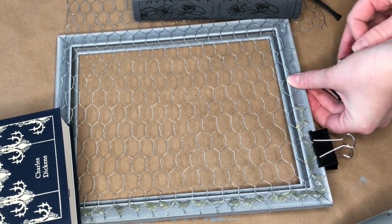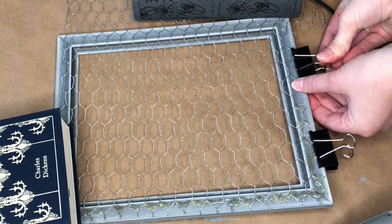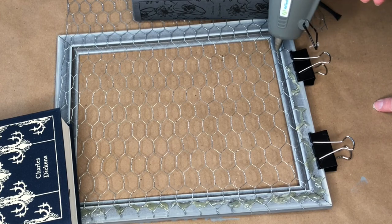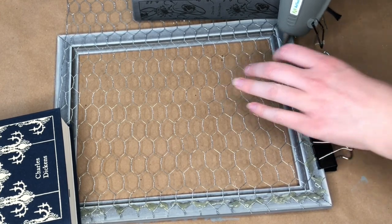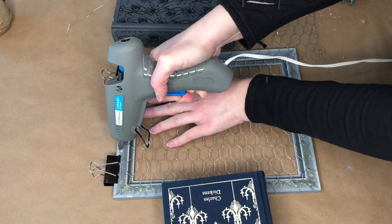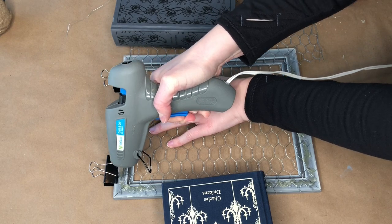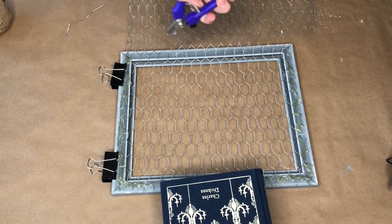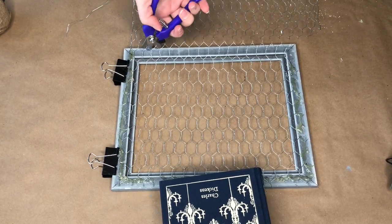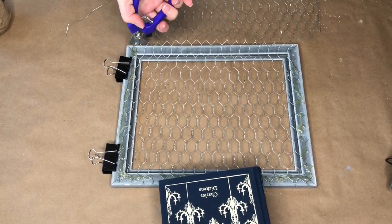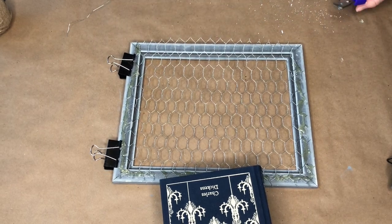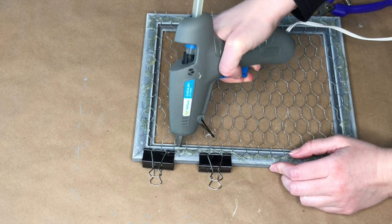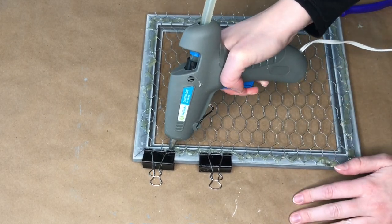I know that the Dollar Tree crafter square section has some of those clamps that you can get that would also work, or you know, you could just use binder clips like me. Pretty sure I have those clamps somewhere around my craft bin, but I couldn't find them at this moment so the binder clips came in handy. Once I had all three sides of the chicken wire glued down to the frame, I used those dog nail trimmers to trim off the excess bit of chicken wire and then continued the exact same process using the hot glue and the binder clips to adhere the last side of the chicken wire to my frame.